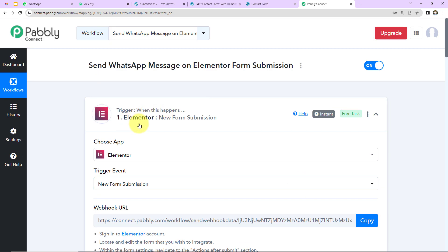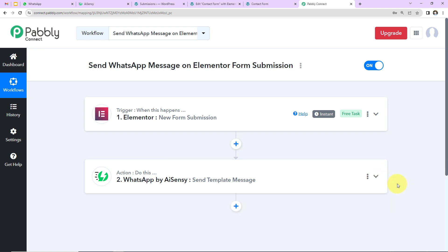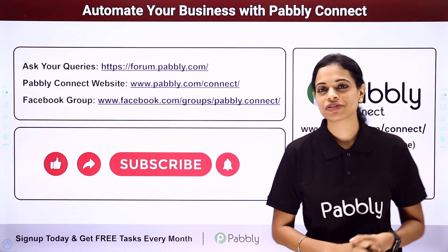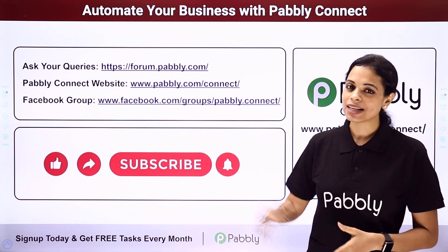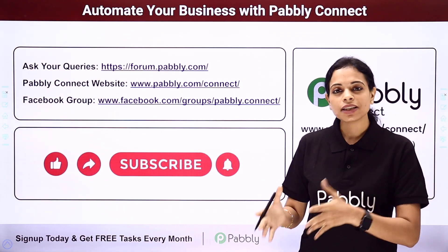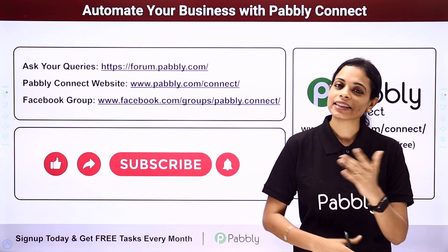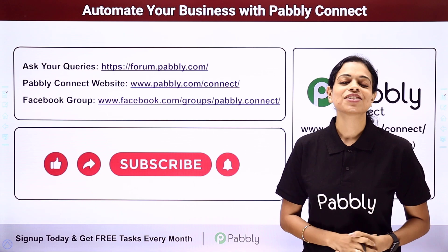To summarize: our trigger was Elementor with the event 'New Form Submission,' and our action application was WhatsApp by AiSensy with the event 'Send Template Message.' If you have any doubts, refer to the workflow linked in the video description — you can also clone it and start immediately. For specific integrations, write to us. You can integrate multiple applications using Pabbly Connect and post queries at forum.pabbly.com or visit www.pabbly.com/connect. Don't forget to like, share, and subscribe!